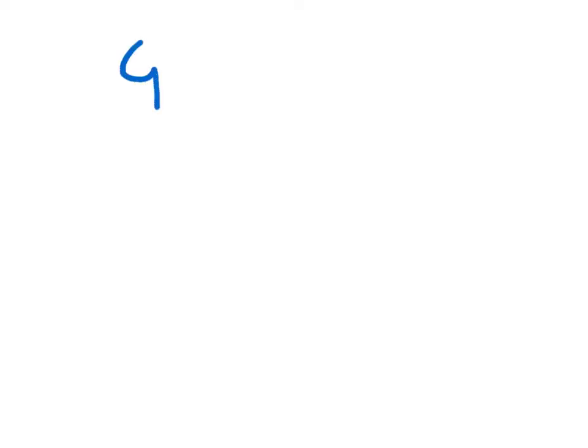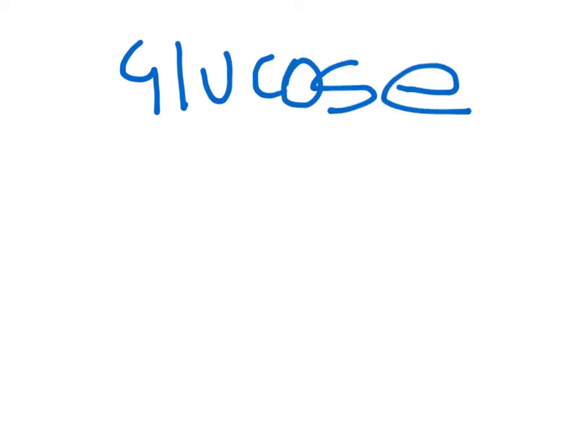Glucose is extracted from complex molecules found in fats and proteins, as well as disaccharides and polysaccharides. An example of a disaccharide is sucrose, and a polysaccharide would be starch.